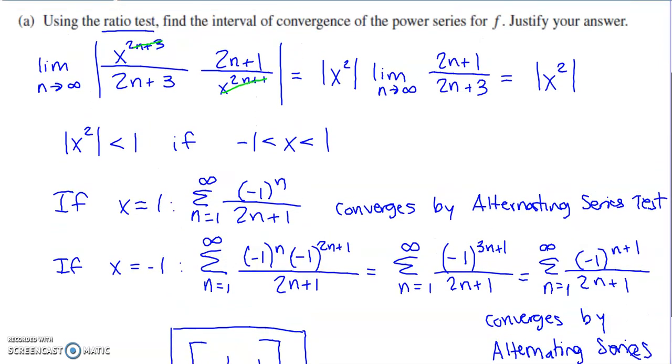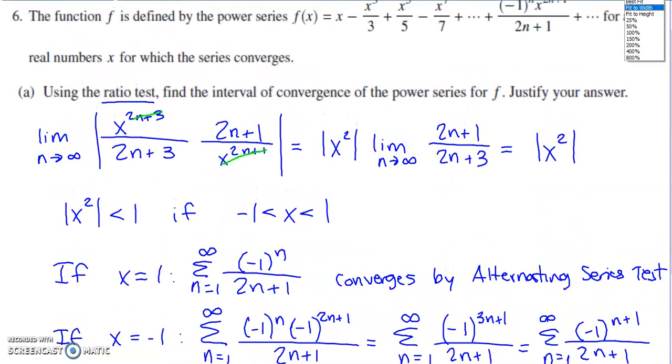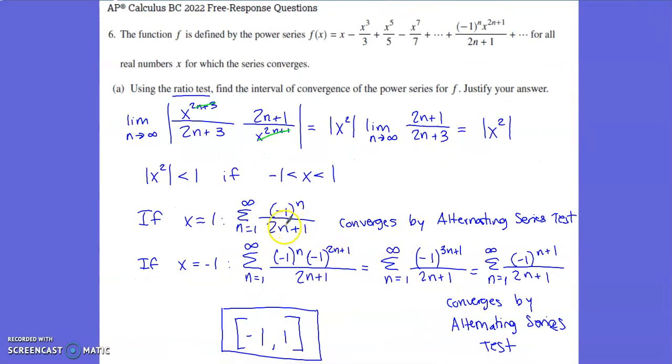So when I plug 1 into the series, when I plug 1 in place of this x in the series, 1 to whatever this power is just going to be 1, so I'm basically just left with this. And one thing that you'd have to be careful with, you wouldn't want to call this the alternating harmonic series. It definitely behaves very similarly to the alternating harmonic series, but because of this addition that's happening within the denominator, it's technically not the alternating harmonic series. It is going to be a series that converges by the alternating series test, so that would allow us to include the endpoint of 1 within our interval of convergence.